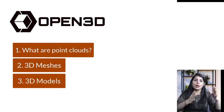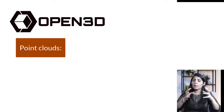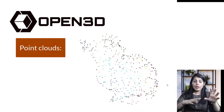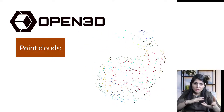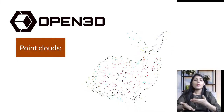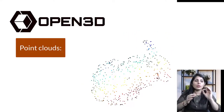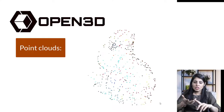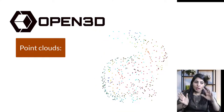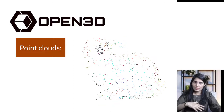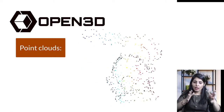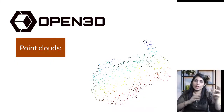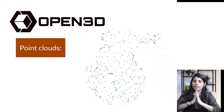Let's begin with point clouds. A point cloud is a collection of points which represents some object. Basically, whenever you want to create any 3D model or 3D mesh, the very first step is collecting point clouds — a collection of points which represents an object. With the help of point clouds, we can make 3D meshes and models.